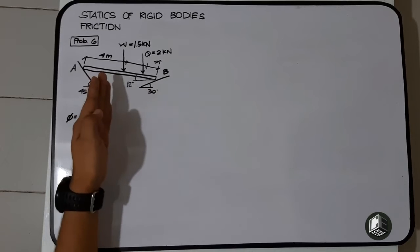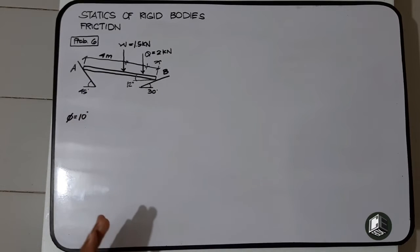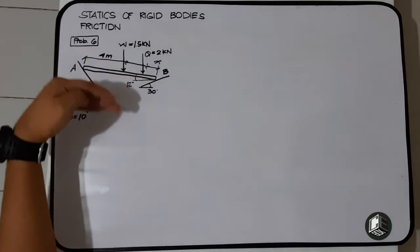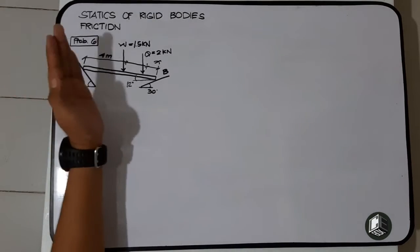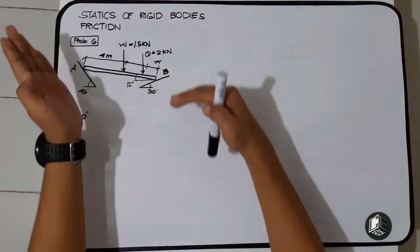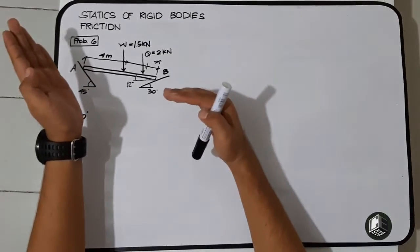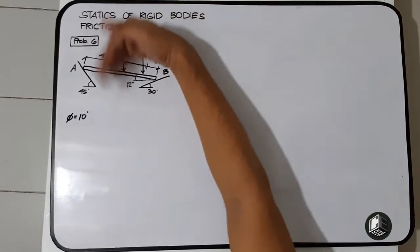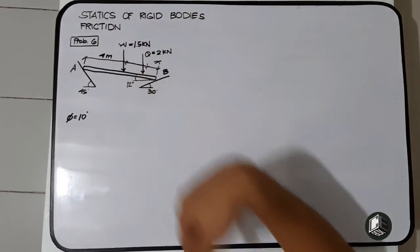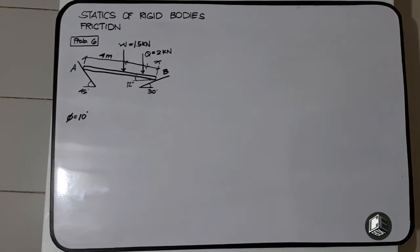We need to determine how the bar AB would move. Since this is 45 degrees and this is 30 degrees, the bar at point B will move like this. This is the movement we need to remember - we need to oppose this movement using the frictional force.